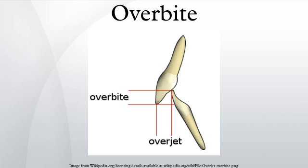Regarding changing human dentition, American anthropologist C. Loring Brace brought forth a theory that the human overbite of Europeans is only about 250 years old, and this shift was the result of the widespread adoption of the table knife and fork. Before the use of cutlery, Europeans would often clamp their teeth on a piece of meat and cut off a piece with a knife. When Europeans started using forks and knives, the cutting was done on the plate and the overbite became much more common.